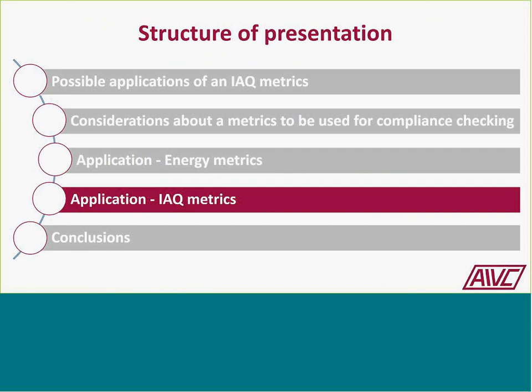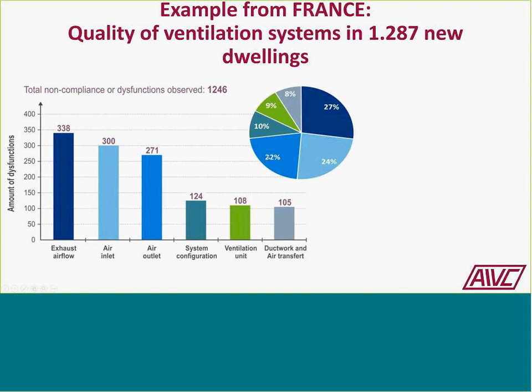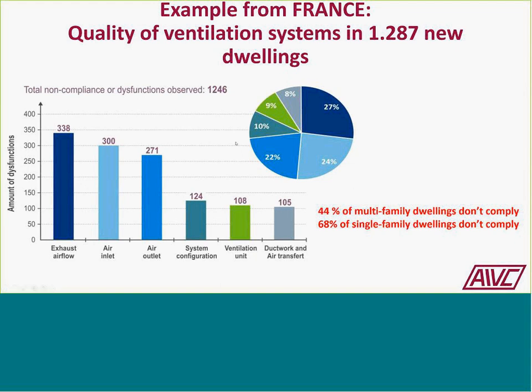Looking at IAQ metrics applications: experience from France shows that 1,287 new dwellings were assessed for ventilation system performance. In 338 out of 1,287 dwellings, problems with exhaust flow rate were found. Summarizing compliance: for multifamily dwellings, 4% were non-compliant, while for single-family dwellings it was two-thirds—a very high degree of non-compliance. Having a requirement is one thing; meeting it in reality is not always as evident as one might think.